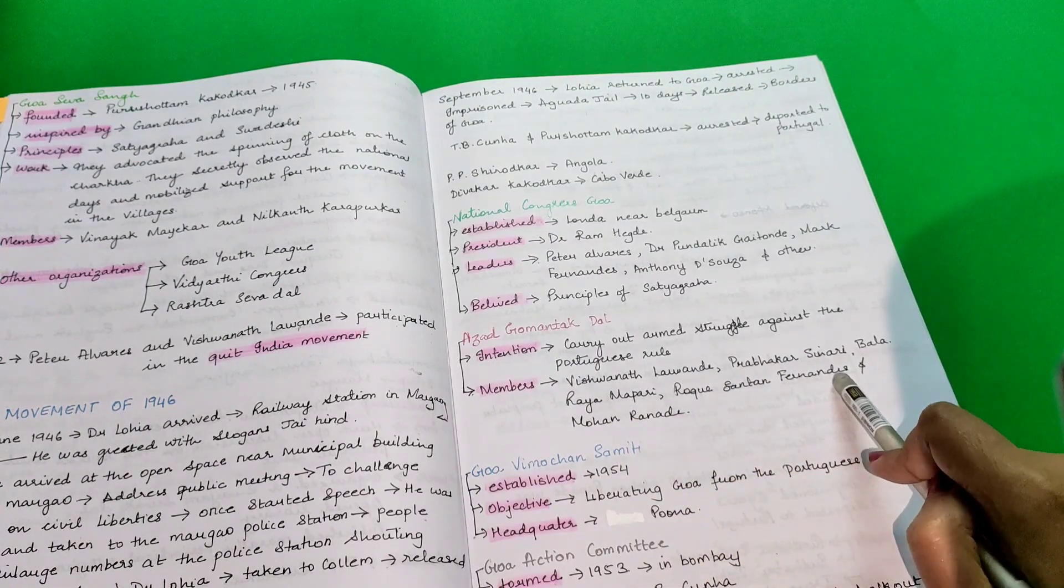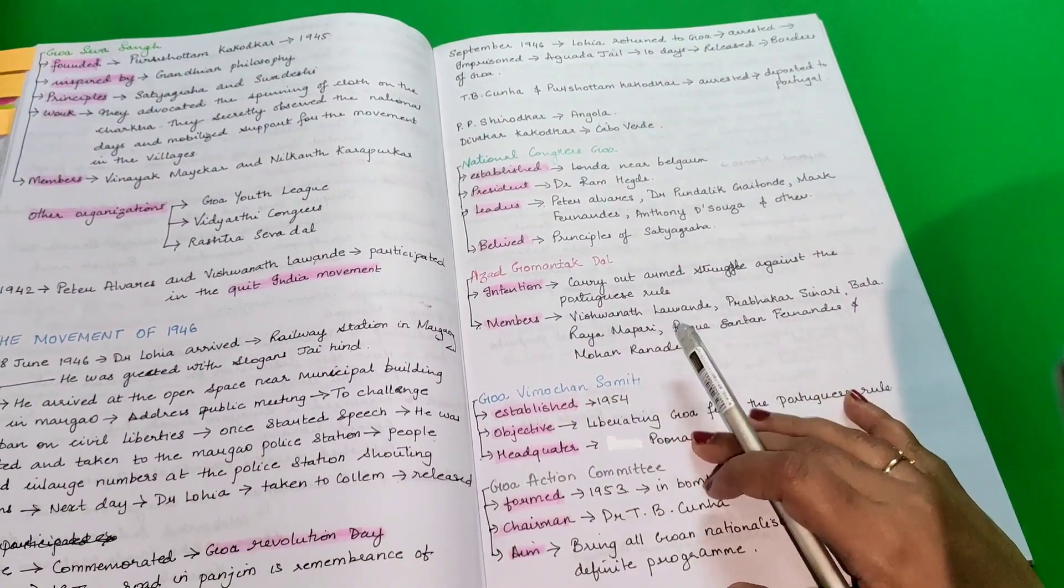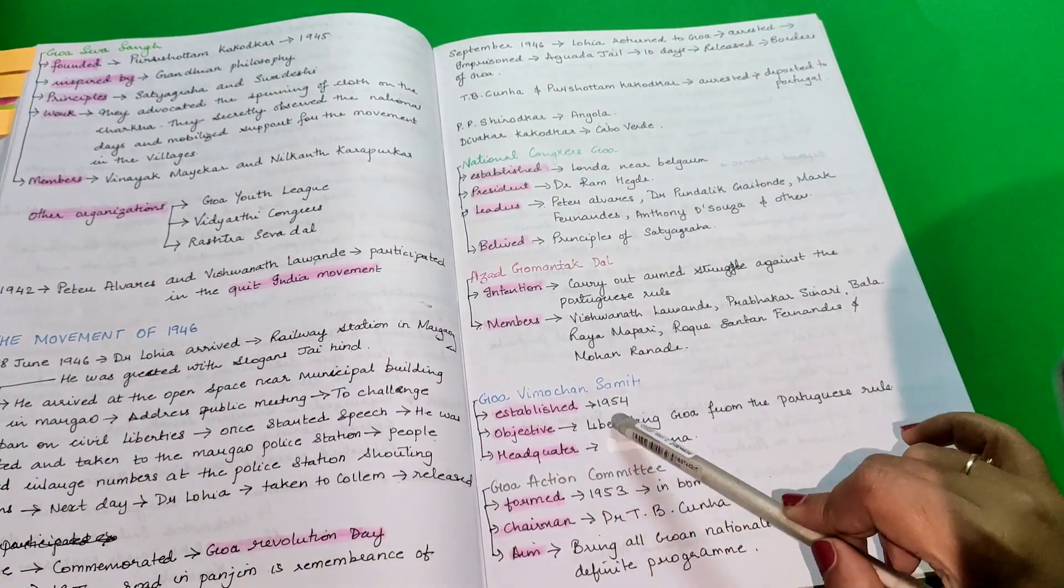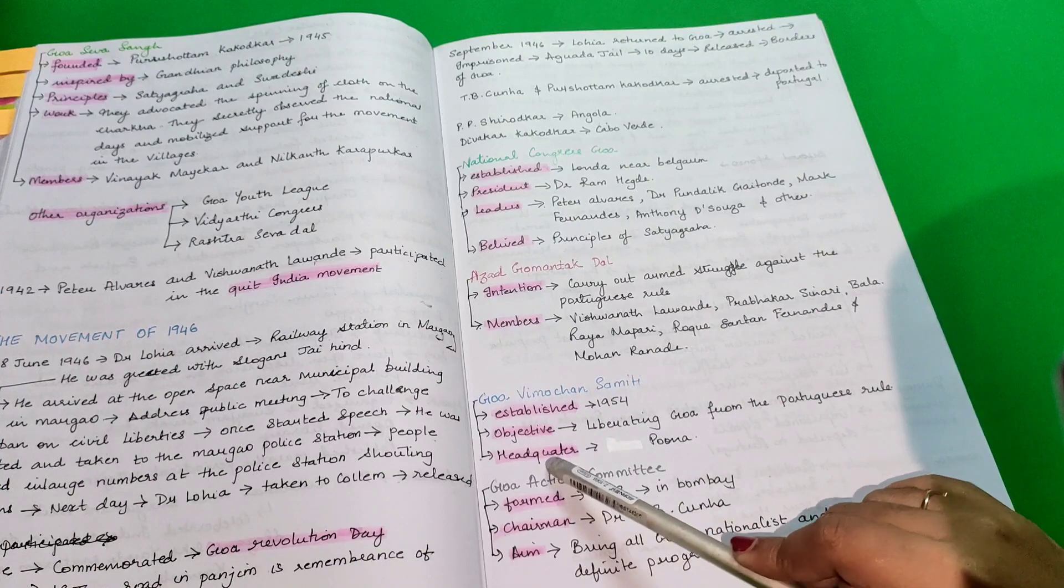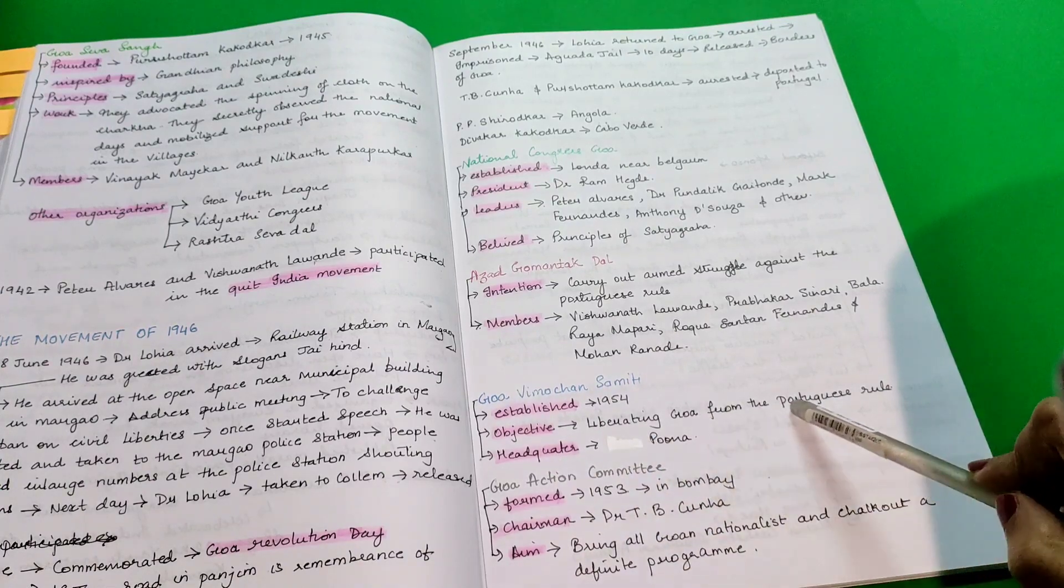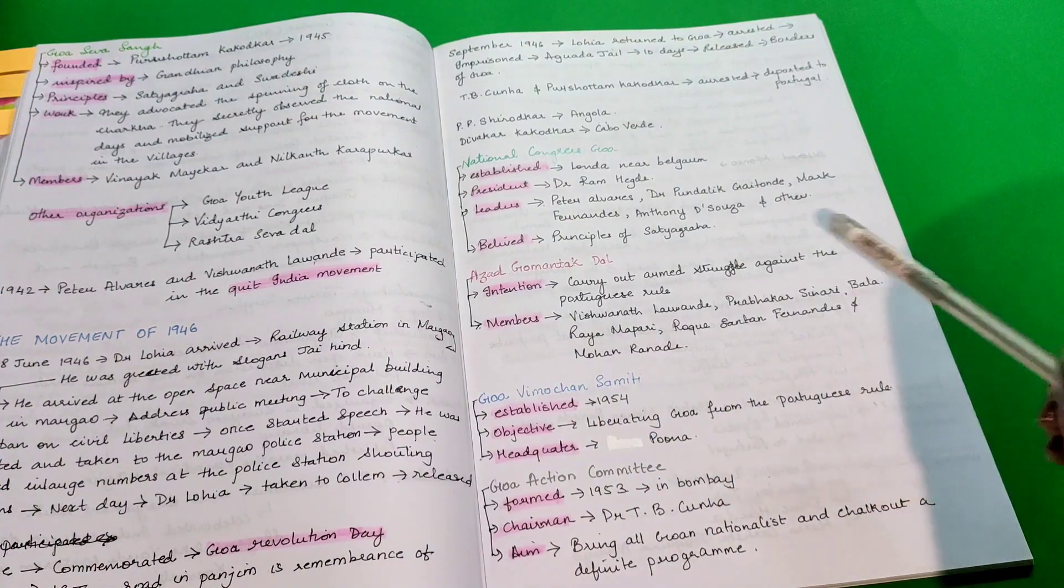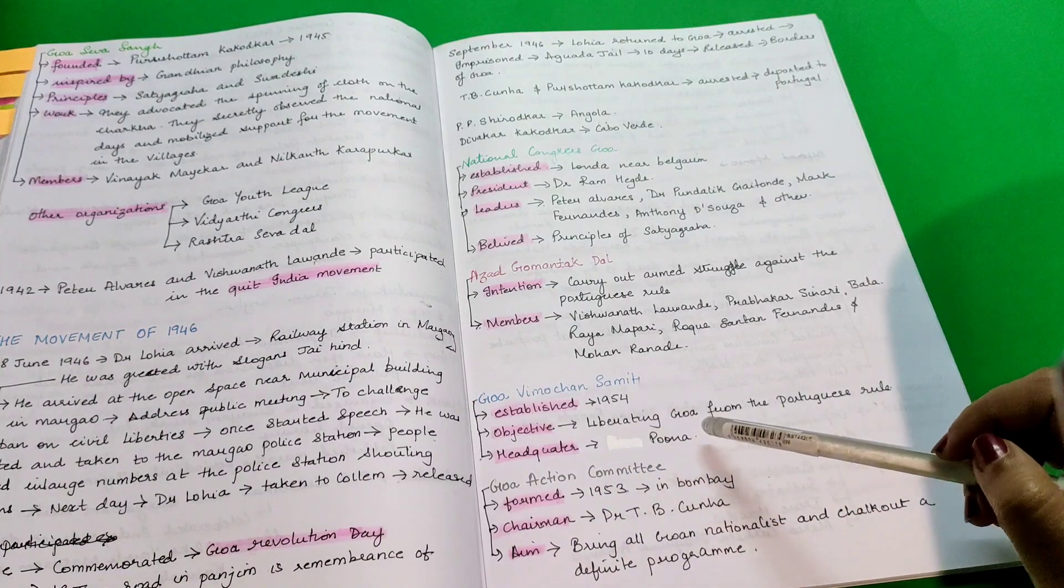Goa Vimochan Samiti was established in 1954 and their objective was to liberate Goa from the Portuguese rule. Their headquarters was at Pune.